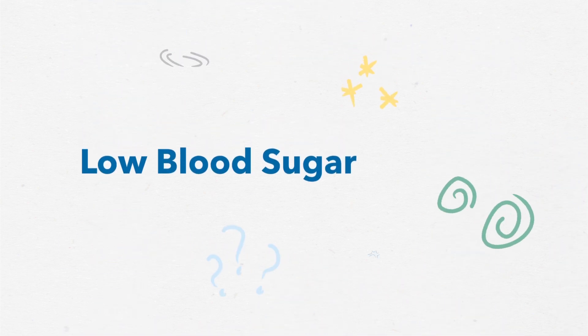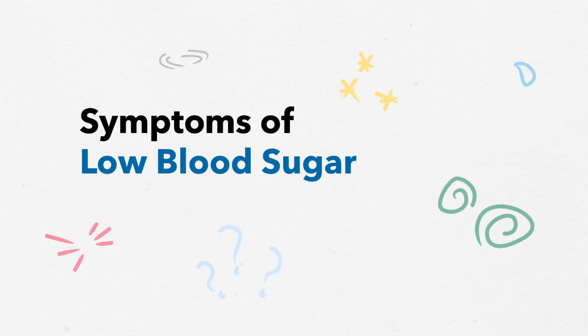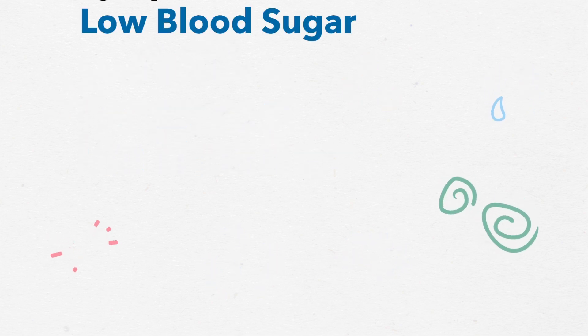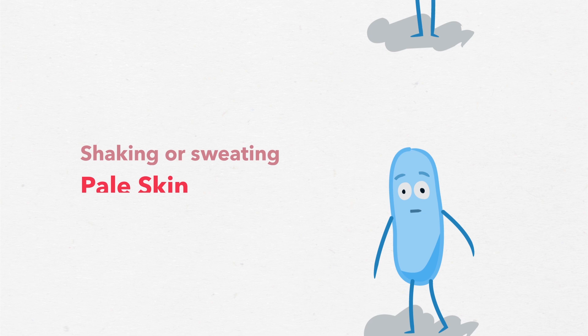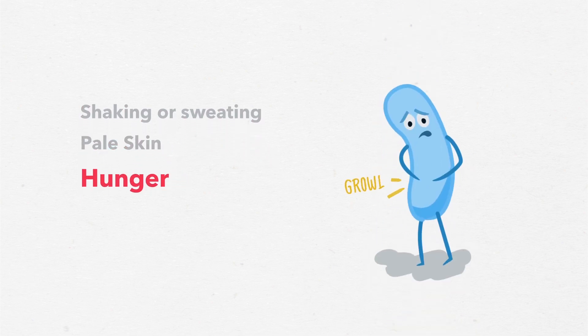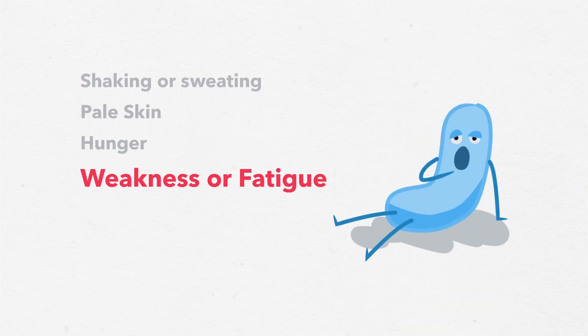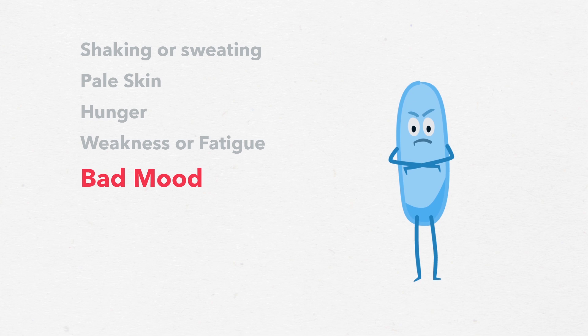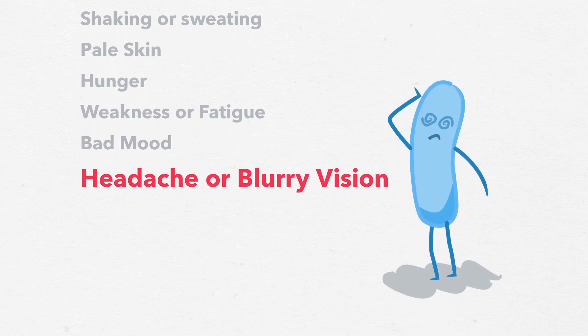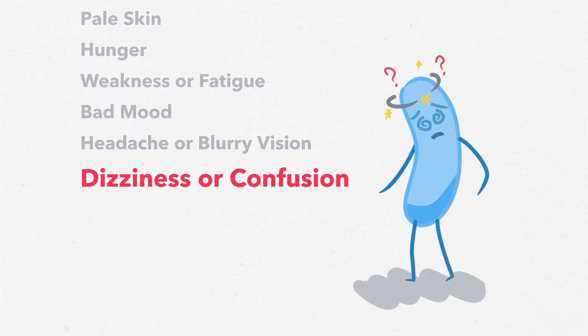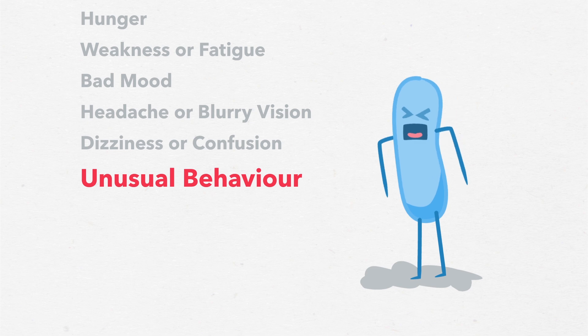Not everyone has the same symptoms of low blood sugar. Common ones include shaking or sweating, pale skin, hunger, weakness or fatigue, bad mood, headache or blurry vision, dizziness or confusion, or any unusual behavior.